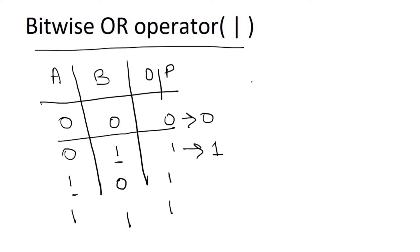Let's take an example: A OR B. If A is equal to 3 and B is equal to 5.